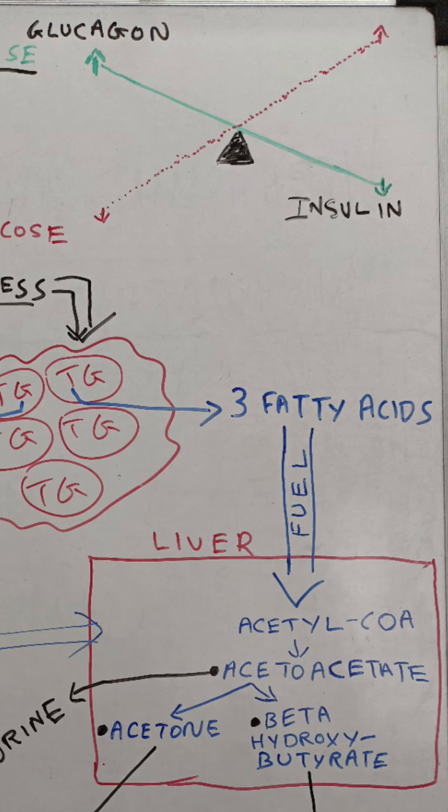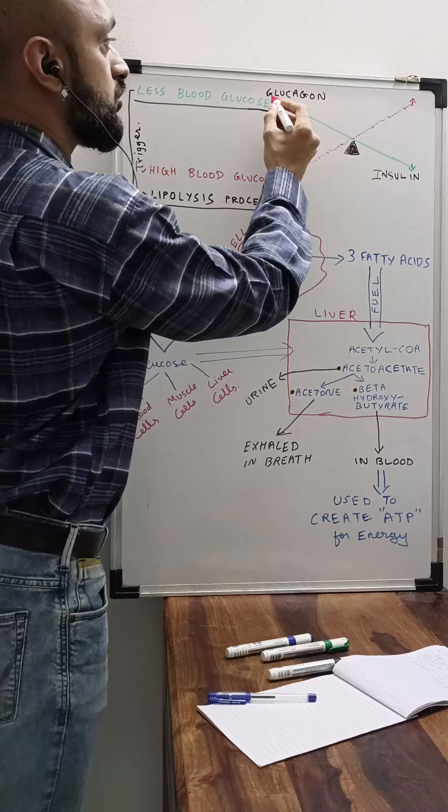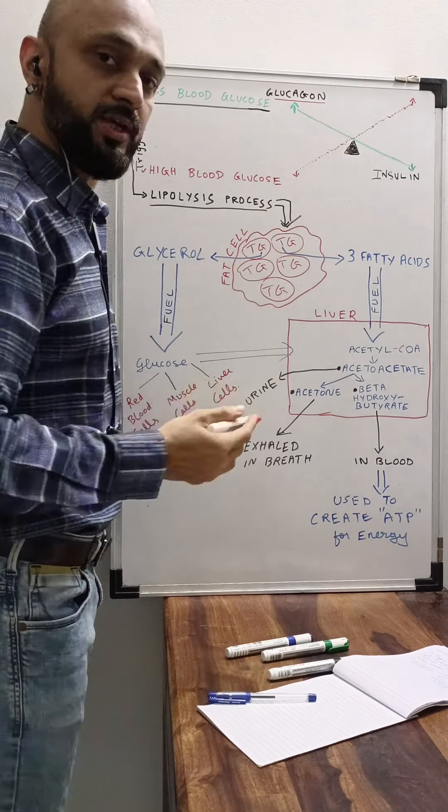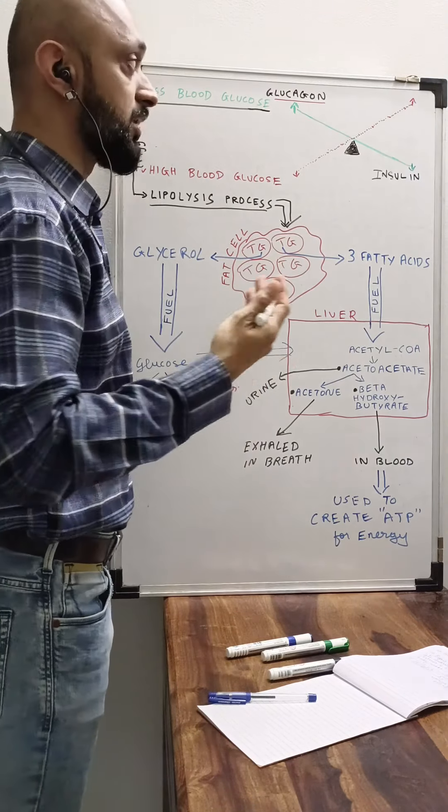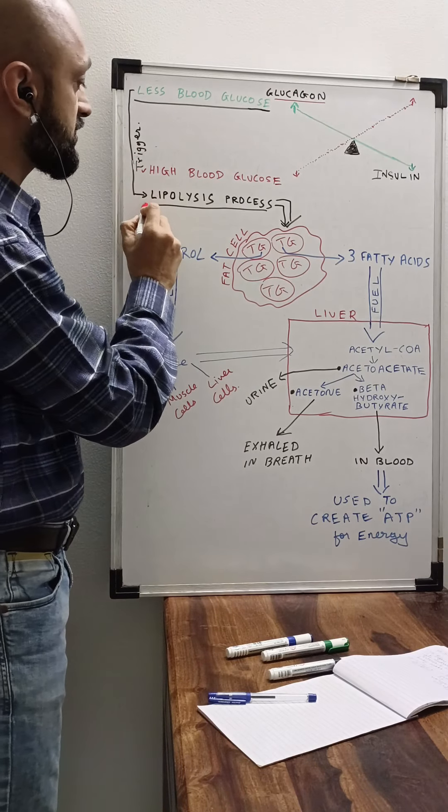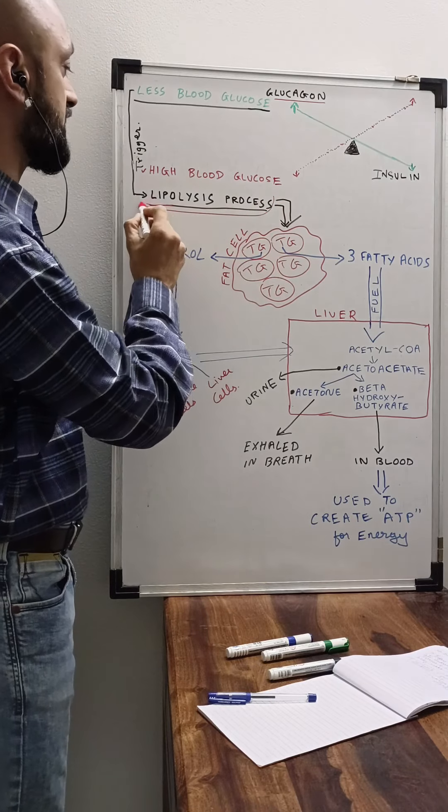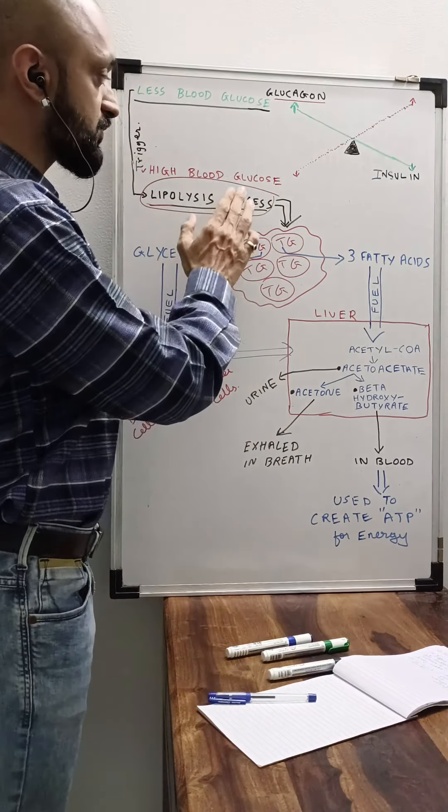Here in this less blood glucose situation, the hormone insulin goes down, and the level of glucagon hormone is going up. If the body has more glucagon produced in the blood, then it triggers the lipolysis process. Once this lipolysis process is triggered, the fat breakdown begins.